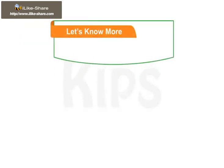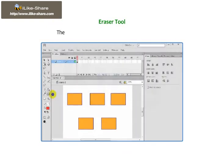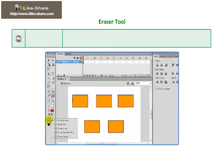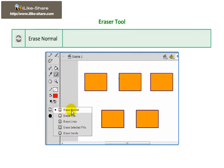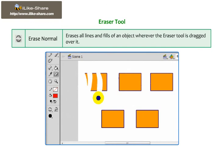Faucet Modifier helps to speed up erasing of lines and fills. The different Eraser Mode modifiers are as follows. Erase Normal: erases all lines and fills of an object wherever the Eraser Tool is dragged over it.